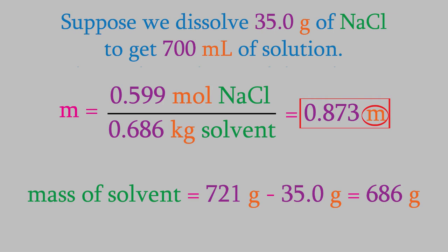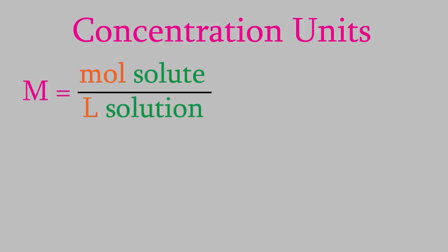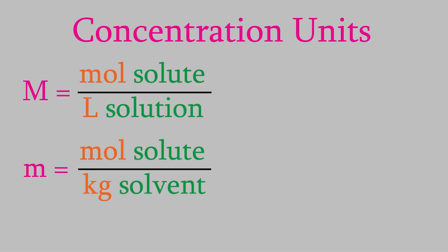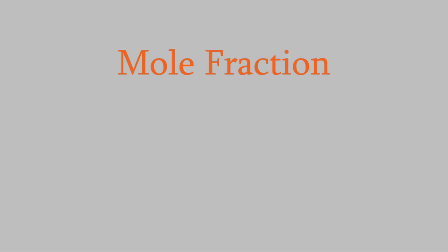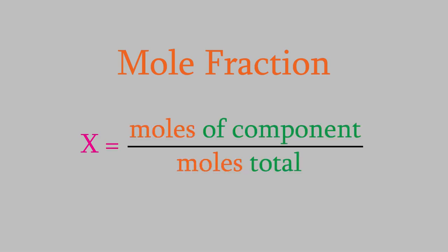So we've seen two different concentration units: molarity and molality. Let's look at another one. One useful new unit is the mole fraction, which has the symbol x. When we have more than one ingredient in a solution, the mole fraction for a particular component is the moles of that ingredient divided by the total moles for all the components.